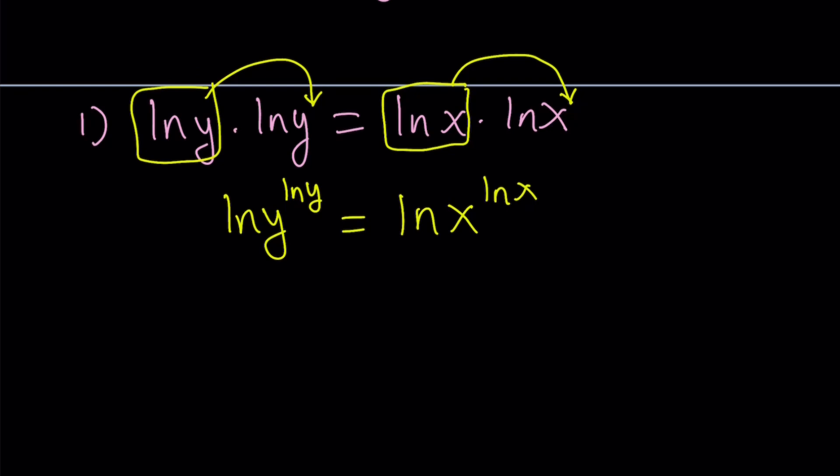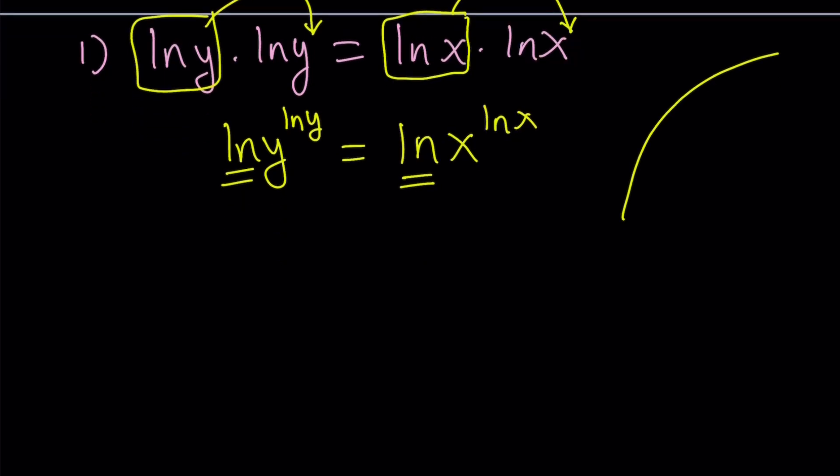Why is this useful? Because we have ln on both sides and ln is an increasing function. Remember, its graph looks like this. So we can just totally forget about the ln and write this as y^ln(y) equals x^ln(x).